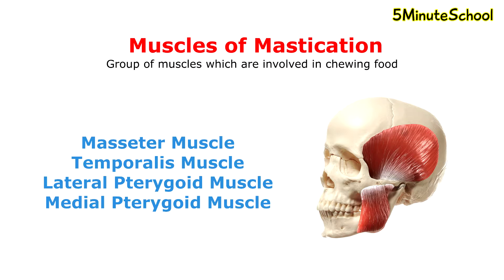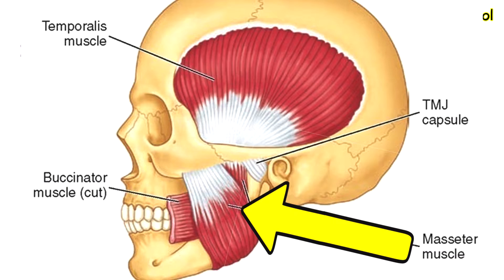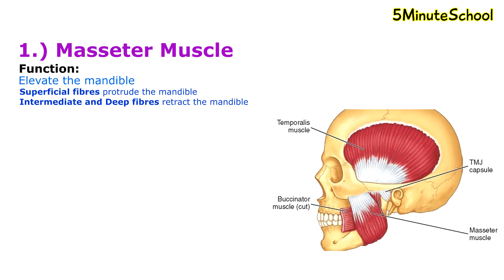The muscles of mastication serve the purpose of working together to open and close the mouth and chew and grind food. The first muscle we're going to talk about is the masseter muscle. Its main function is to elevate the mandible. The superficial fibers of the masseter muscle protrude the mandible, and the intermediate and deep fibers help to retract the mandible.